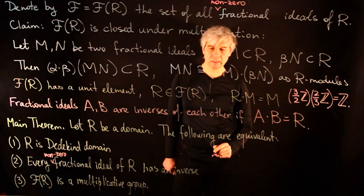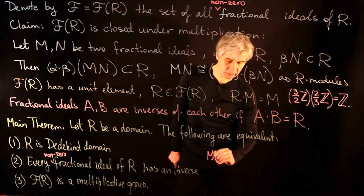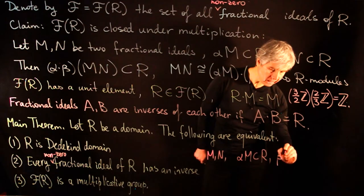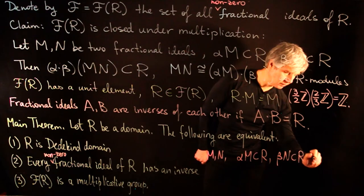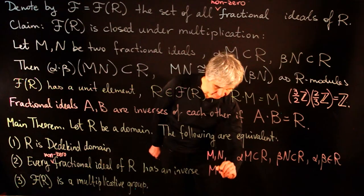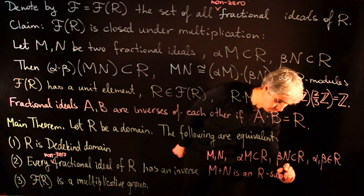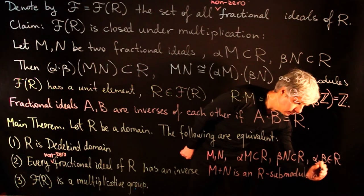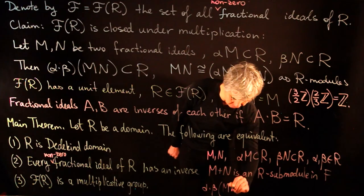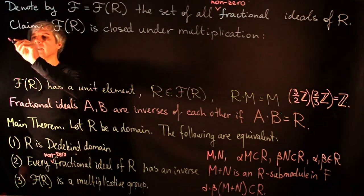We point out that the set of fractional ideals is also closed under addition. If M and N are fractional ideals with α·M inside R and β·N inside R, where α and β are elements of R, then M + N is an R-submodule in F, and α·β·(M + N) is inside R.